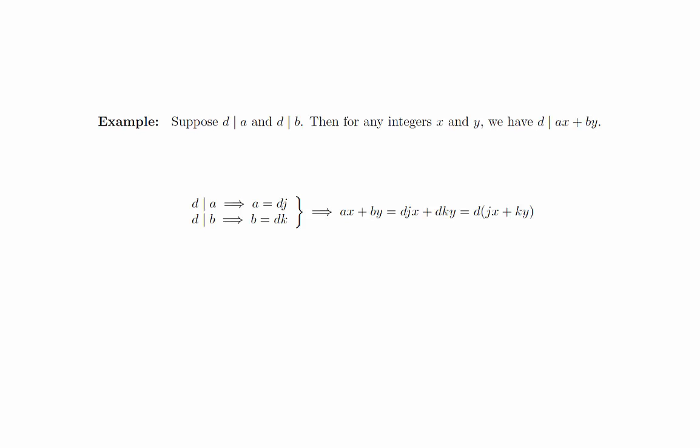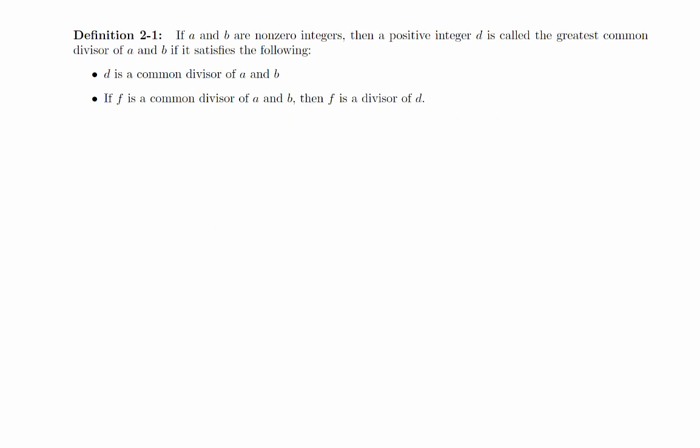we call d a common divisor of a and b, and this naturally leads us to consider another definition. Definition: If a and b are nonzero integers, then a positive integer d is called the greatest common divisor of a and b if it satisfies the following: d is a common divisor of a and b, and if f is a common divisor of a and b, then f is also a divisor of d.